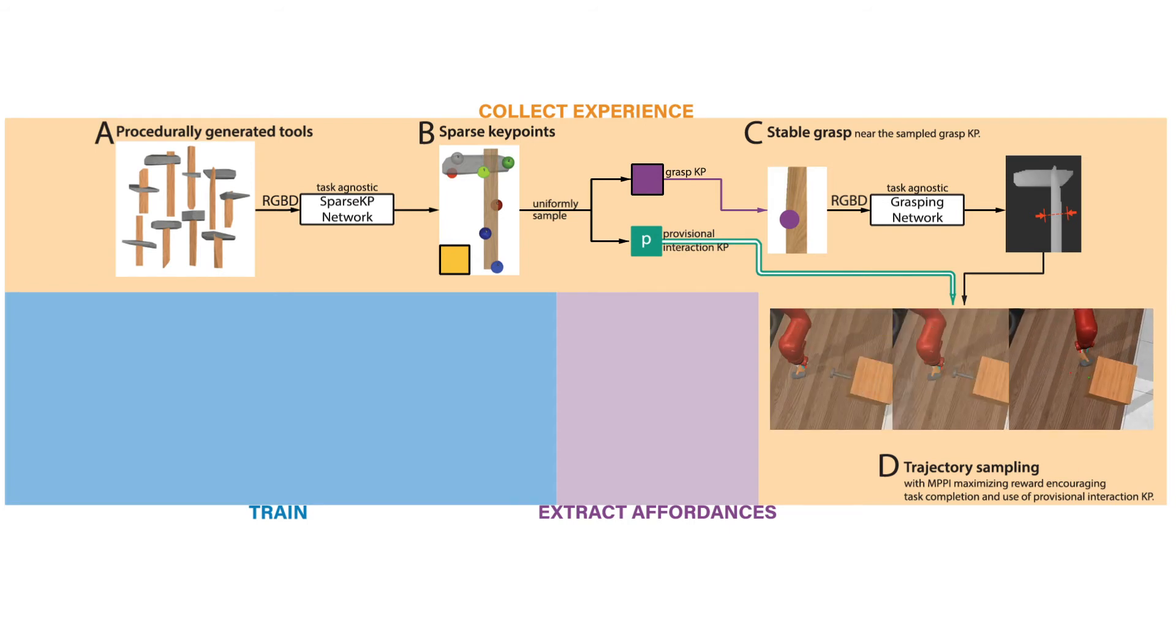MPPI iteratively samples action sequences from the full action space and takes their average weighted by reward. We use this reward to encode task success and encourage use of the selected key points. This lets us condition the motion on predicted key points while still sampling actions from the full, unconstrained action space.